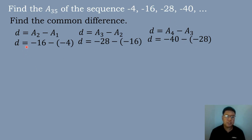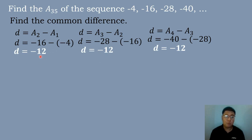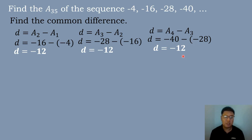So d is equal to: negative 16 — negative times negative gives positive 4, so negative 16 plus 4 equals negative 12. Then negative 28 plus 16 equals negative 12. And negative 40 plus 28 equals negative 12. So the common difference is equal to negative 12.